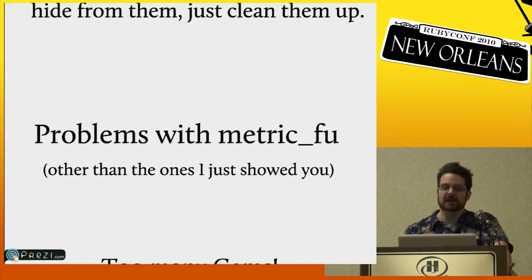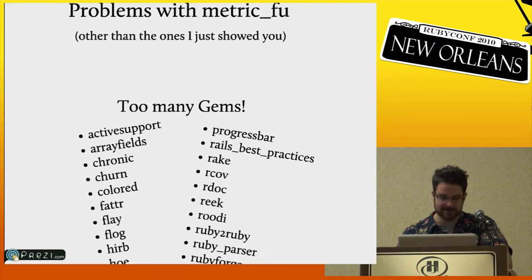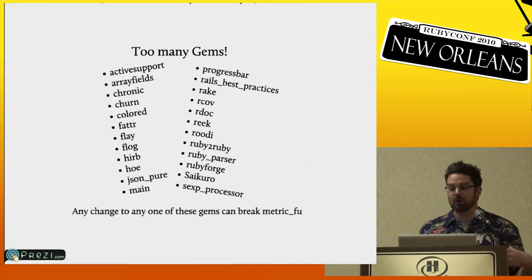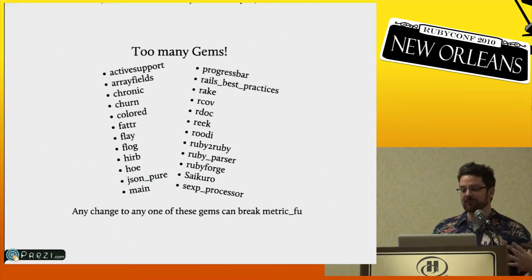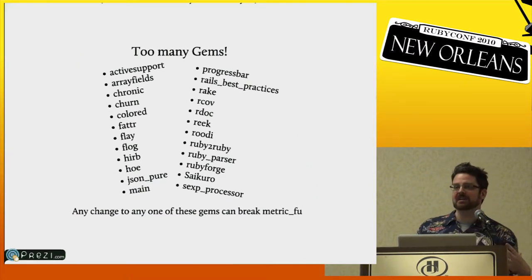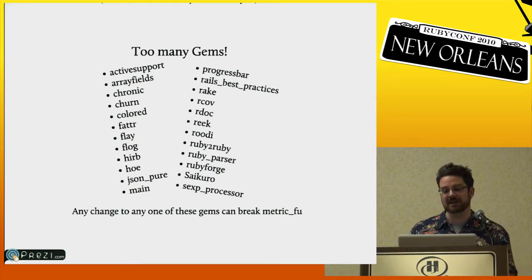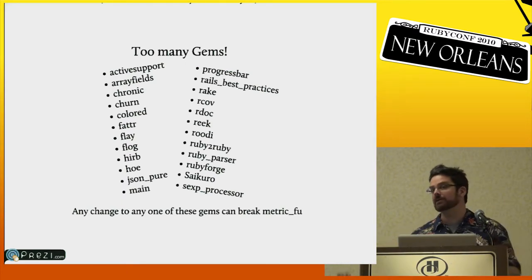That's the big point of MetricFu: everybody on every project always feels like 'the code's kind of a mess,' and when you ask everybody what you should fix first, nobody agrees. The point of MetricFu is to help solve that problem — what's the worst thing? Let's fix the worst things first.